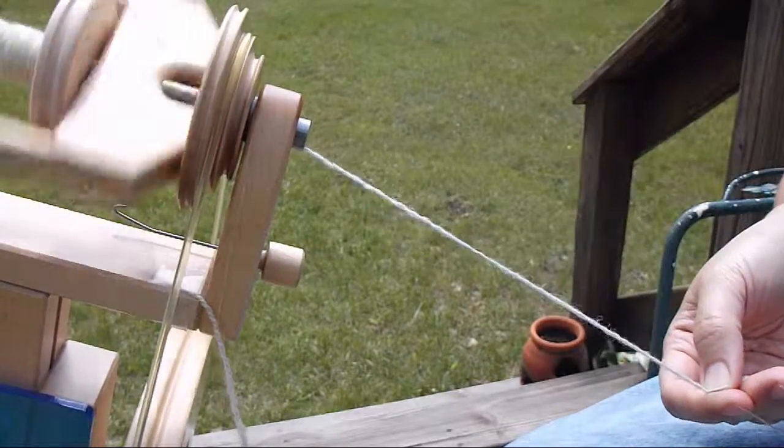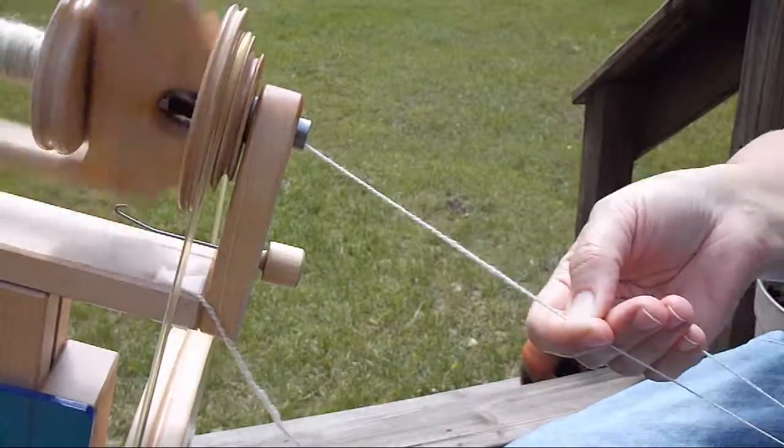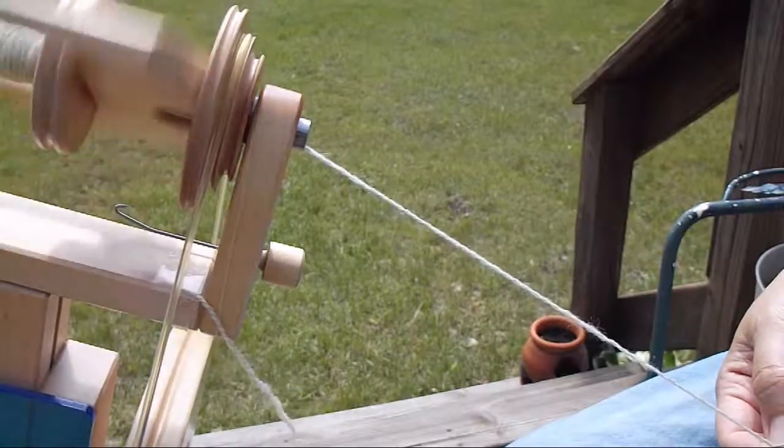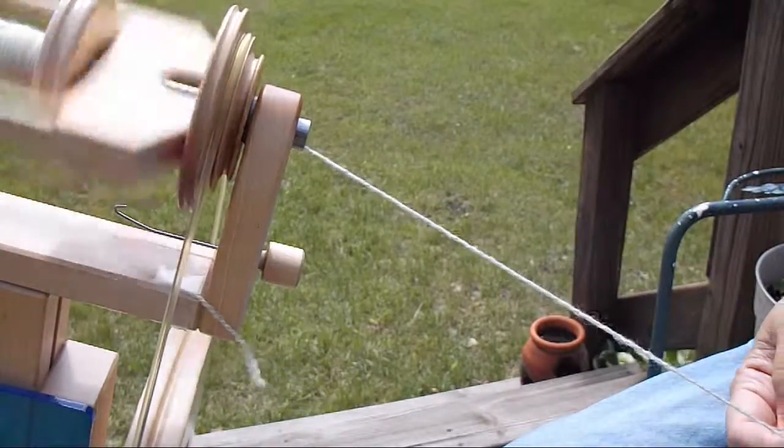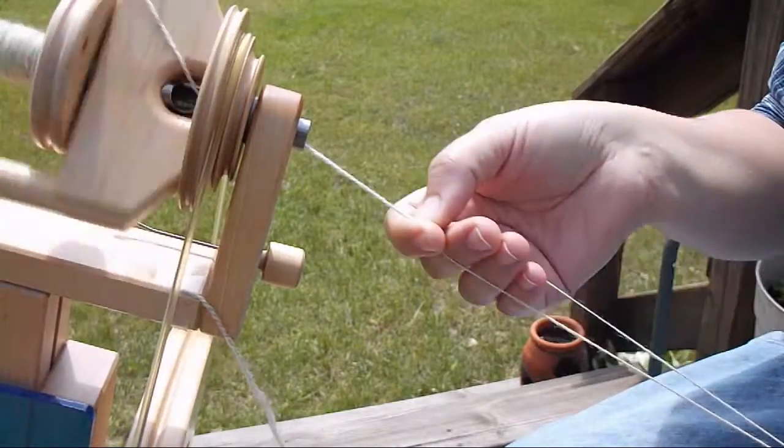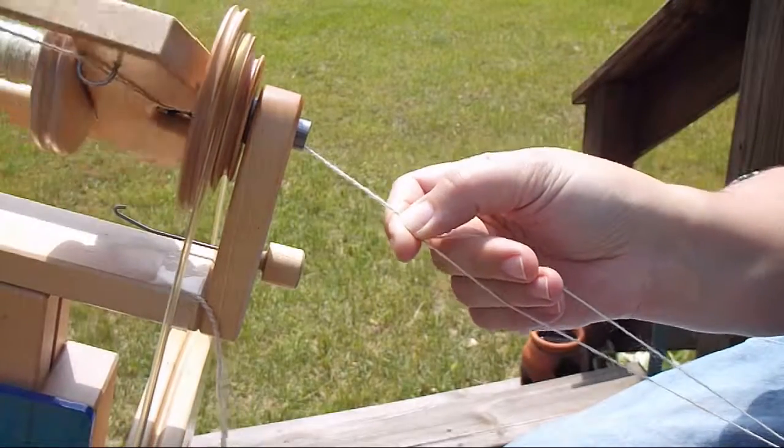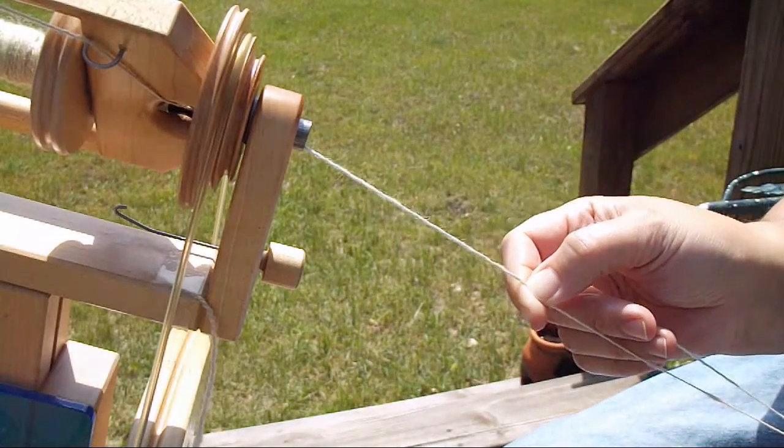I'm at the plying stage right now. I have my two bobbins of singles on a lazy kate on the floor behind my left elbow and I'm tensioning the two strands with my left hand. With my right hand I'm pinching those two plies between my forefinger and my thumb as I draw my hand back.